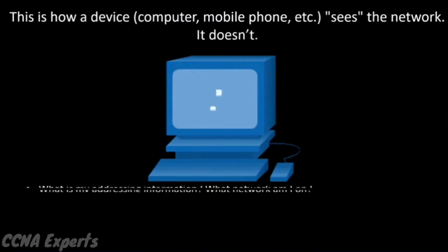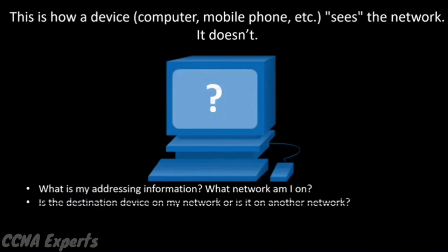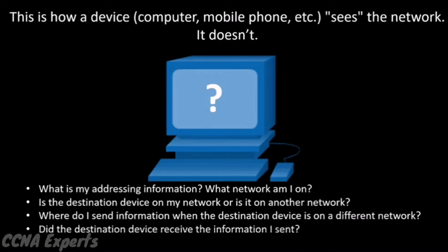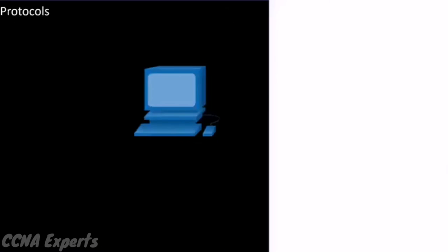So, how does a device know its IP address and what network it belongs to? How does a device know if the destination device is on the same network or another network? If the destination is on another network, how does the source device know where to send it next? How does the source device know if the information it sent was received, or if it needs to resend anything? The answer to all of these questions is protocols — the rules that govern how devices communicate.